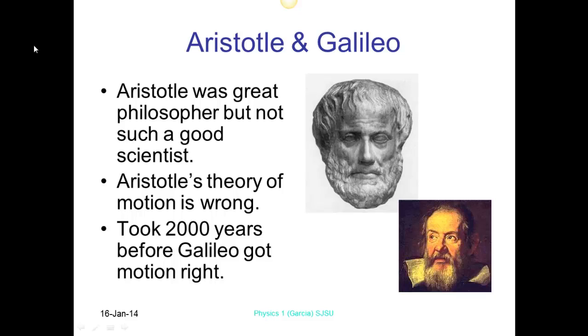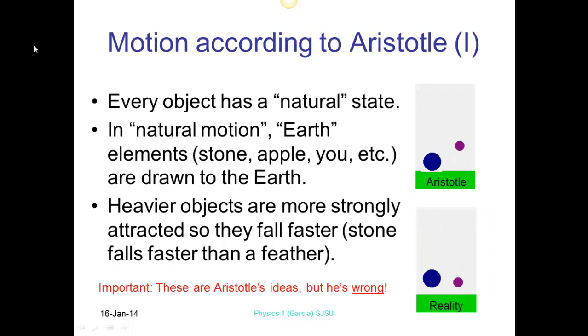So if we start with Aristotle, a philosopher, and a lot of famous scientists were philosophers, his initial theories of motion, based on observation, were actually wrong. So it took 200 years before Galilei actually got the motion right. So he was the founding father of motion. Every object has a natural state. So that was Aristotle's idea.